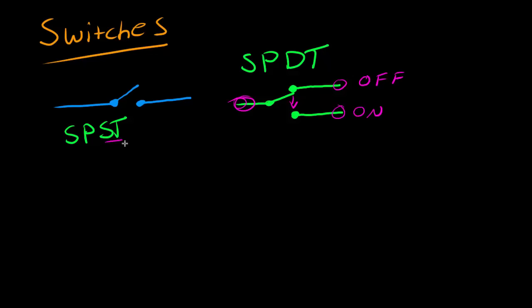In our single throw switch, we only had one connection that was made, and that was when the switch turns on. In our double throw switch, we have a position where the switch is off but it still makes a connection, and when you turn it to the on position it makes a separate connection. So the amount of throws that a switch has is basically the different positions of a switch. On an on-off switch, this is probably what it would look like.